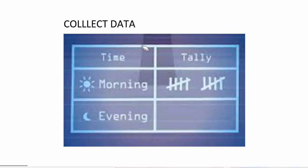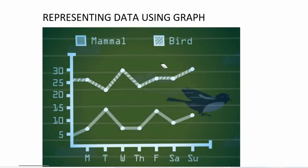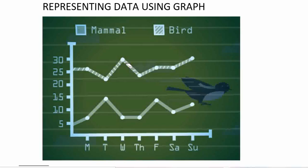After the experiment, we collect the data and we can record it in a tally. For example, the time of day and how many times something happens — we put it in a tally. Next, we have to represent the data. We use a graph so it will be clear to the reader. We can use line graphs, bar graphs, or any type of suitable graph.